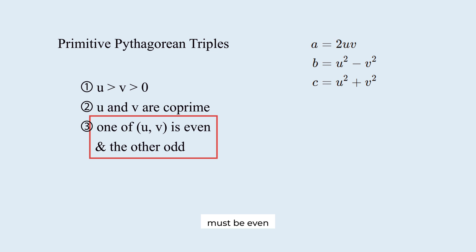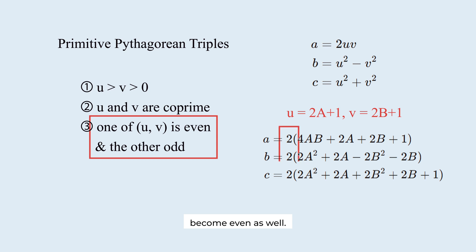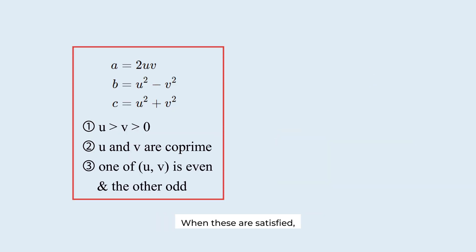Lastly, one of u and v must be even, and the other odd. If both are even, a, b, and c are all even. So, they have a common factor of 2. If both are odd, then a, b, and c become even as well. They have a common factor of 2. When these are satisfied, the resulting triple is guaranteed to be primitive.